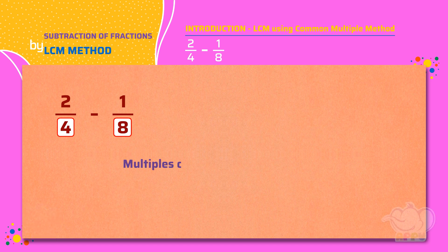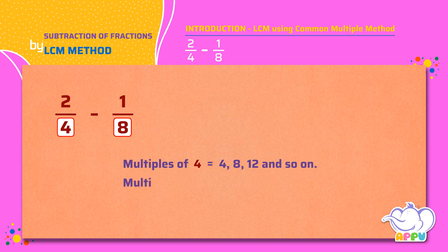Let's make the denominator the same by finding the common multiple of the denominators 4 and 8. Multiples of 4 equals 4, 8, 12, and so on. Multiples of 8 equals 8, 16, 24, and so on. We see that 8 is a common multiple of 4 and 8.